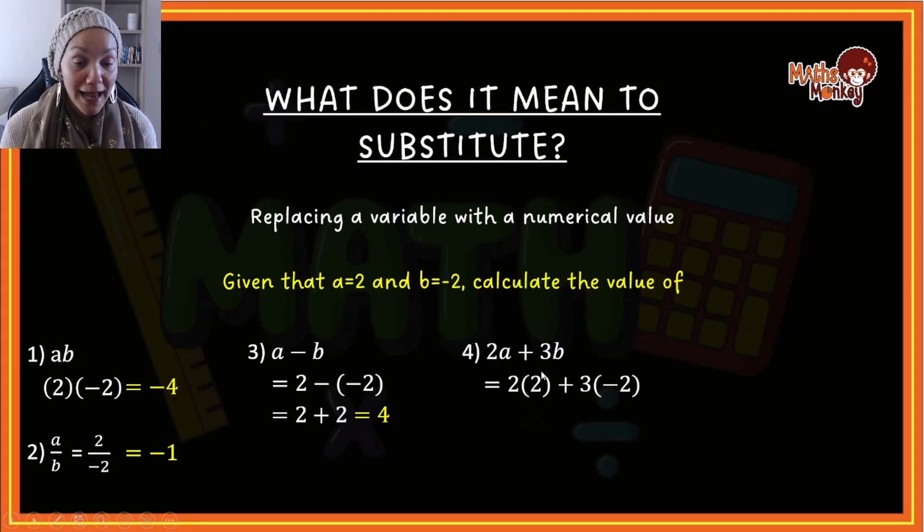With BODMAS we always do multiplication first. So we're going to find the answer of this, which gives us 4, and this gives us negative 6. So we've got 4 minus 6, and the answer is negative 2.